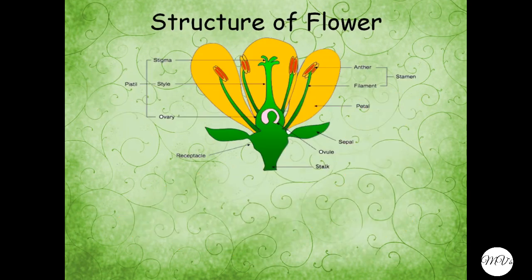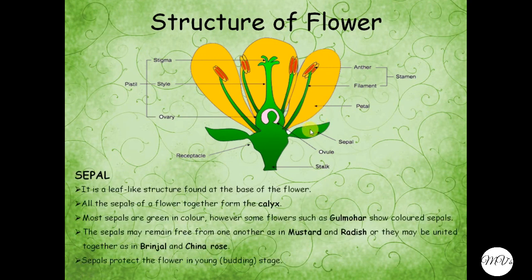Let's see the structure of flower. We'll start with sepal. It is a leaf-like structure found at the base of the flower. The sepal is a leaf-like structure found at the base of the flower. All the sepals together form the calyx.